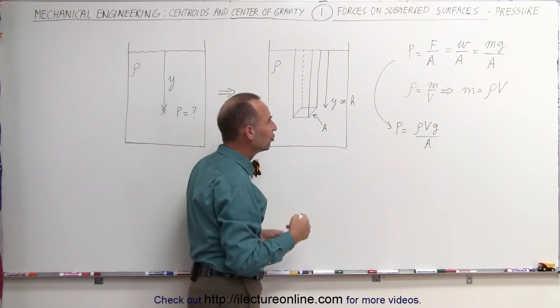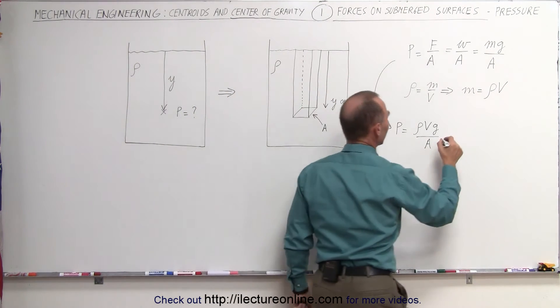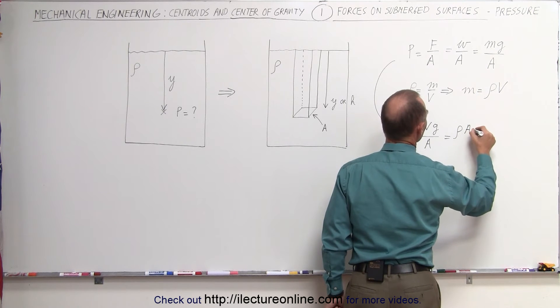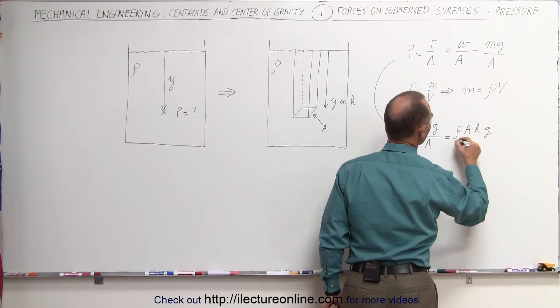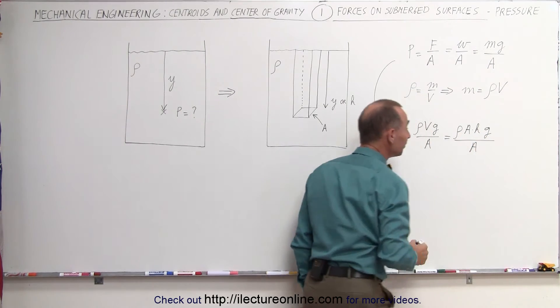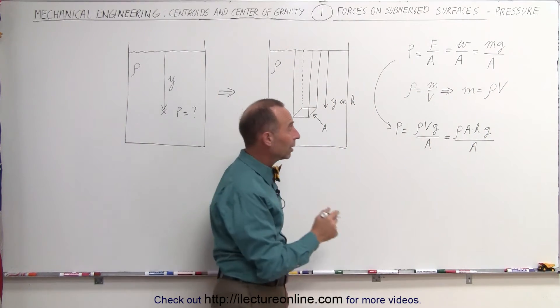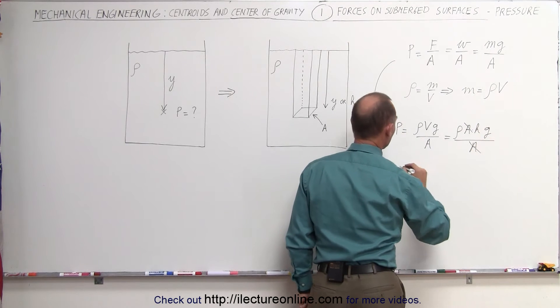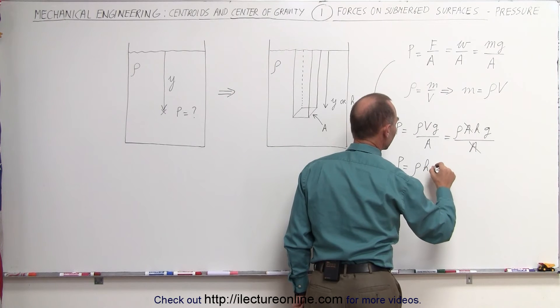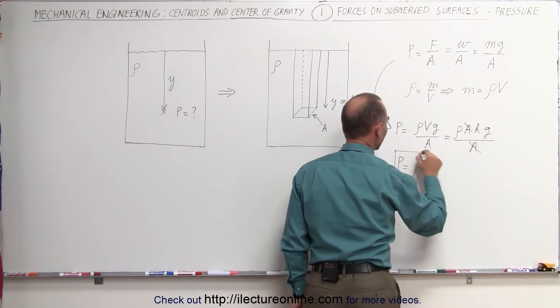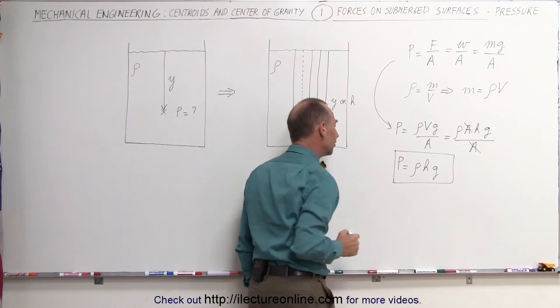This can be written as the density times the area times h, so the volume is area times h, times g divided by the cross-sectional area. Right away you can see that both areas can cancel out, and you end up with the pressure inside the fluid is equal to the density of fluid times the depth of the fluid times g. This is an important equation to know in this segment.